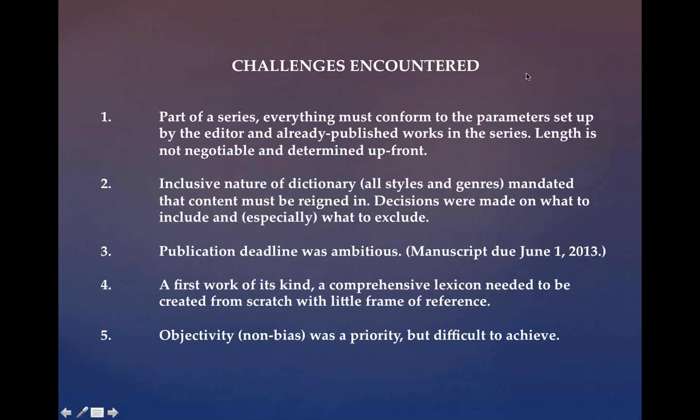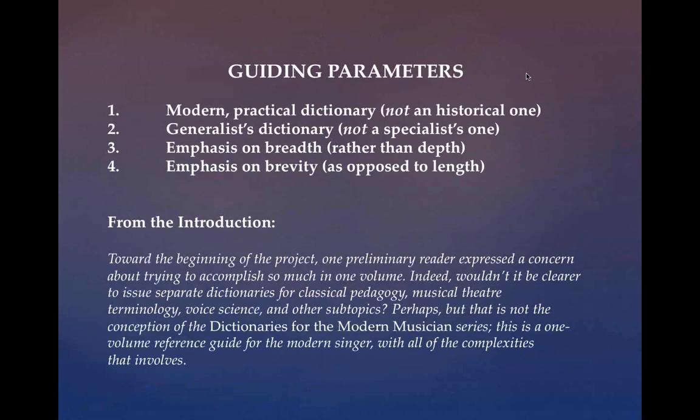Some challenges encountered were that the book had to conform to parameters set by the publisher in advance, including a very specific length of about 256 pages. The dictionary also had to be very inclusive, covering all sorts of different styles, and was written in only about a year and a half. Guiding parameters included being a modern practical dictionary — not historical — a generalist dictionary, with an emphasis on breadth rather than depth, and brevity rather than length.